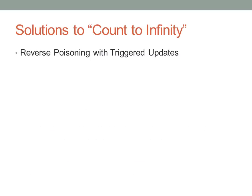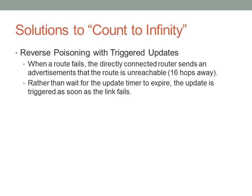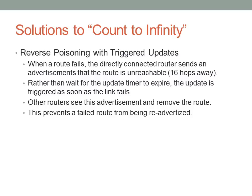There are some solutions to this problem. One is reverse poisoning with triggered updates. When a link fails and a router knows the link has failed, it will immediately send an advertisement that the route is unreachable — this is reverse poisoning, sending the route with a hop count of 16. The triggered update means it sends the route immediately regardless of the timers, rather than waiting for the 30-second update timer. Other routers see the advertisement, remove the route, and that's that.